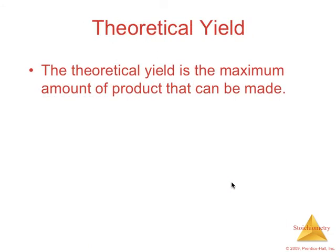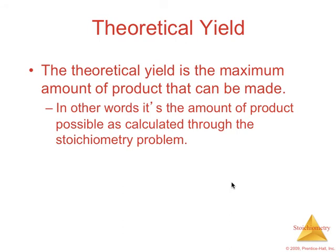Theoretical yield. Theoretical yield is the maximum amount of product that can be made. It's the amount of product possible as calculated through a stoichiometric problem. If there is a limiting reactant, and you identify those problems usually as the one that gives you information on both reactants, the theoretical yield is going to be the amount that you can make, assuming the limiting reactant is entirely used up. You do not calculate the theoretical yield based on the excess reactant, because you don't have enough of the limiting. So theoretically you can only make all of that.